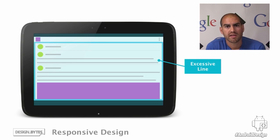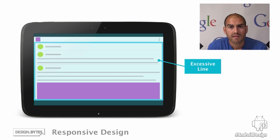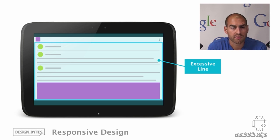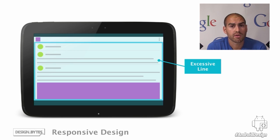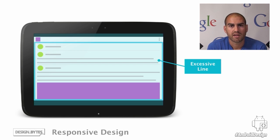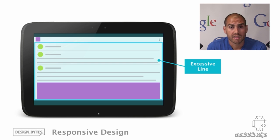The first problem we commonly see is one of having excessive line lengths. In this application, the text and images are running the full width of the device's screen. On a smaller phone-sized device this might be fine, but as you get beyond a certain size, this becomes uncomfortable. Especially when looking at line lengths of text, you want to be aiming for between 45 and 75 characters of text in order to maintain a comfortable reading experience so the user can easily scan across it. In this application, we can see this is clearly exceeding that.